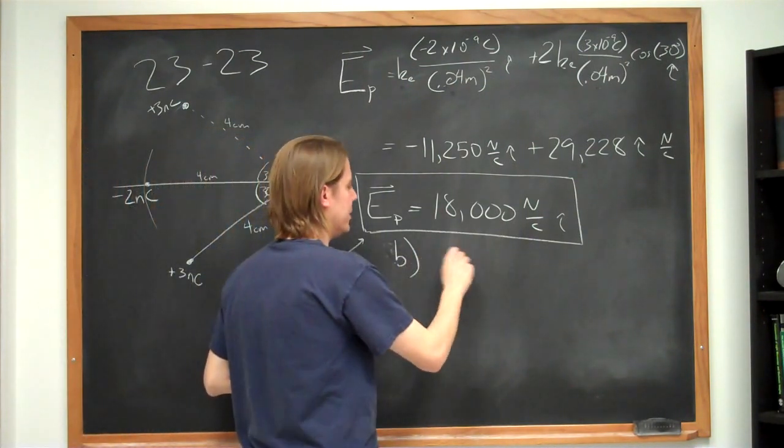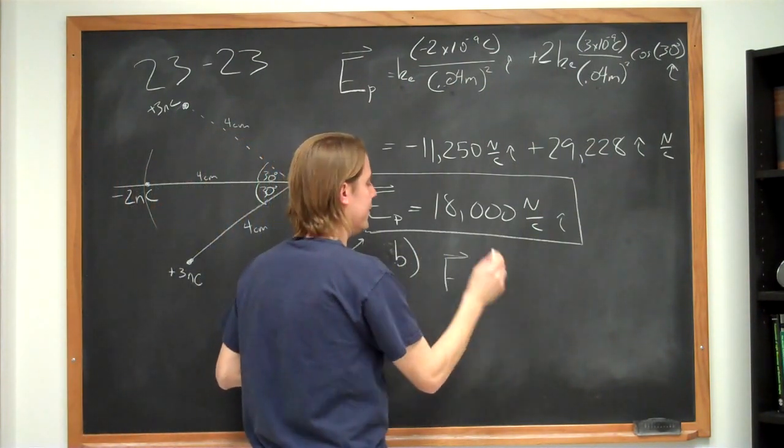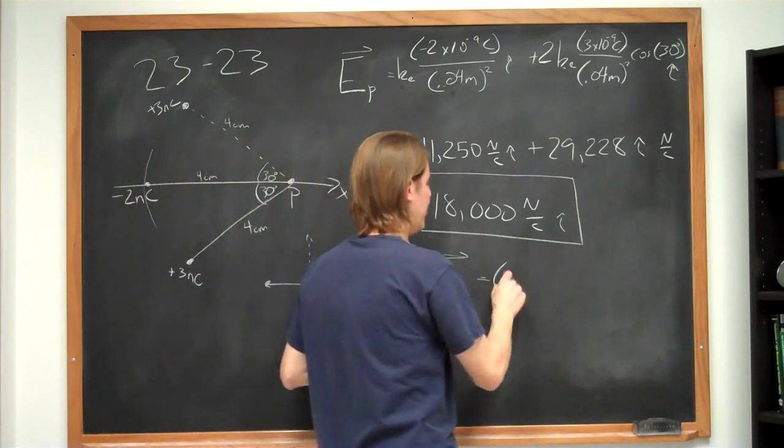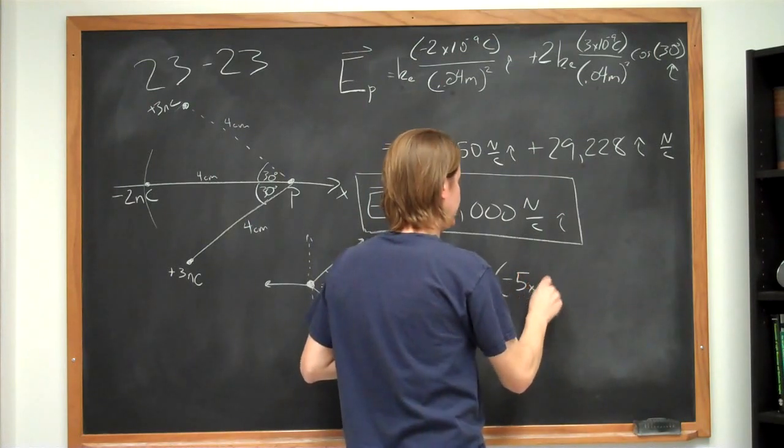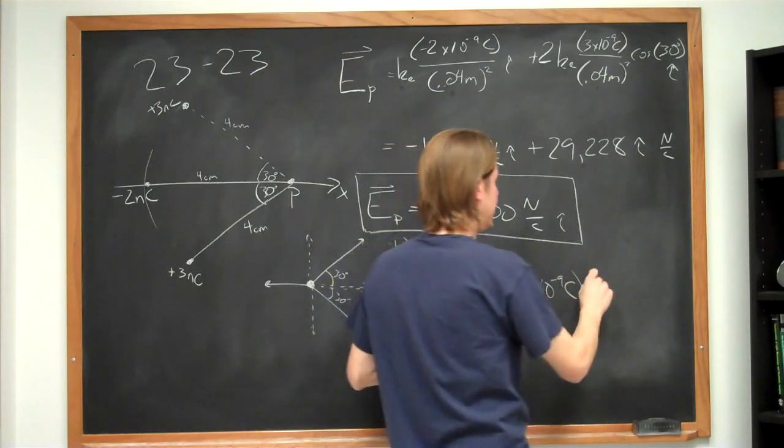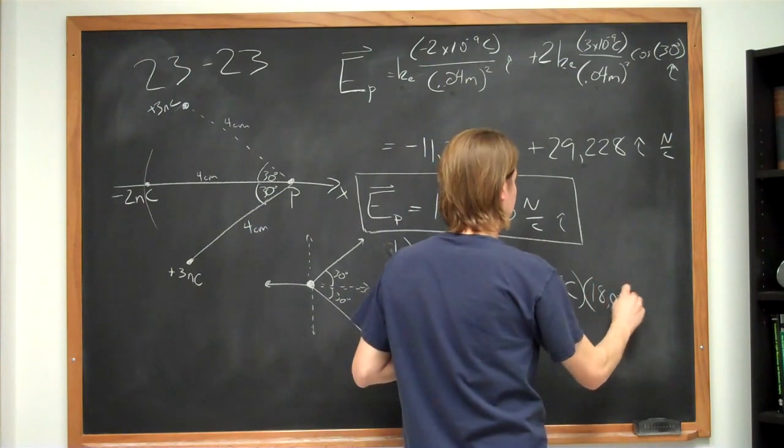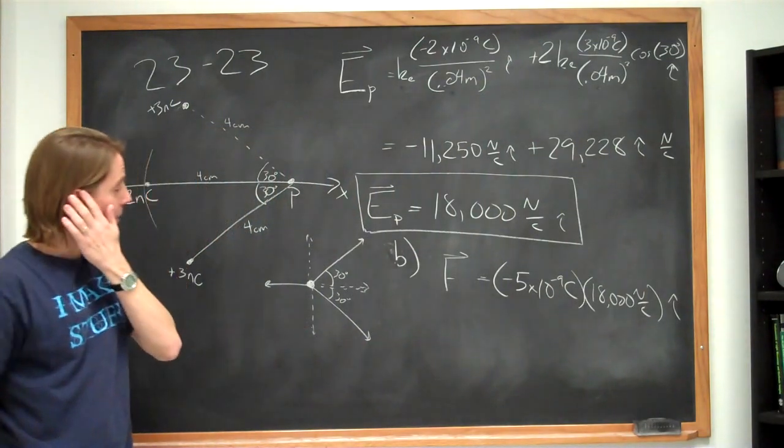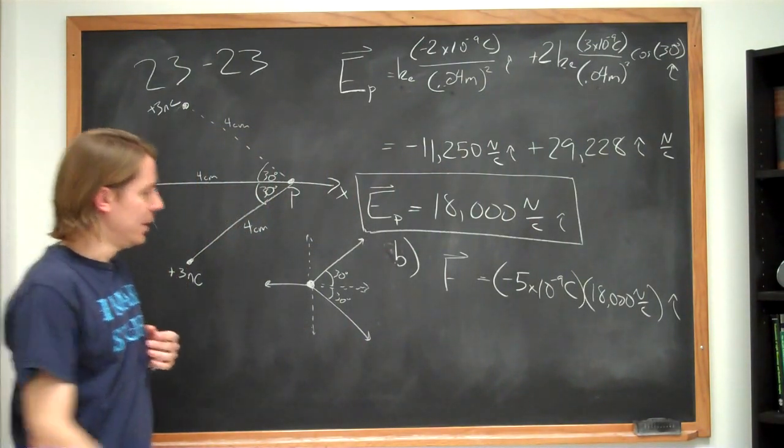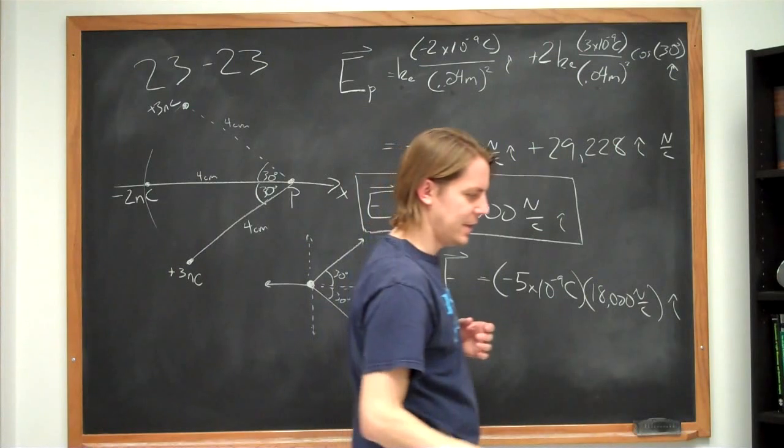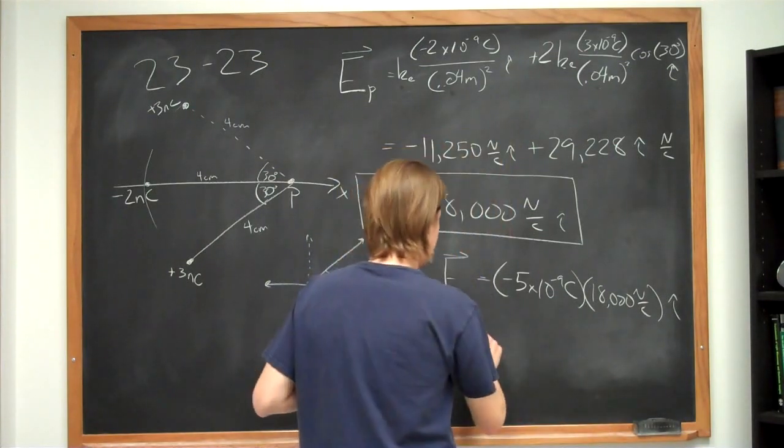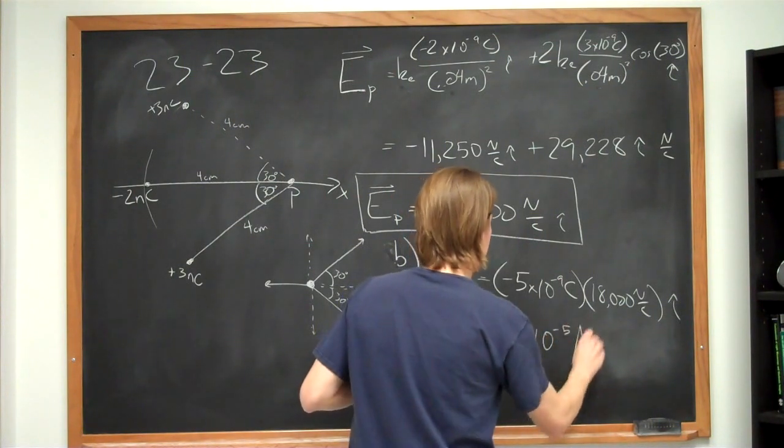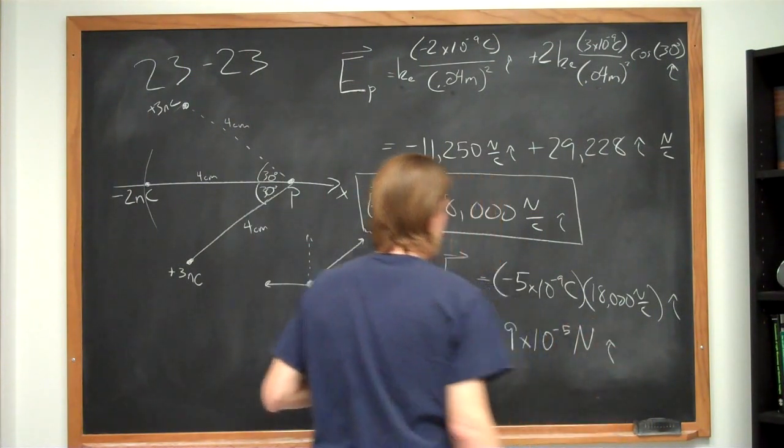And then we just do a direct application of basically the definition of the electric field. We say the force is always the charge times the electric field. So minus 5 times 10 to the minus 9 coulombs times 18,000 newtons per coulomb. It will be in the same direction as the field i-hat direction. So if you just multiply those out, 5 times 18 is usually something kind of like 90. So you get minus 9 times 10 to the minus 5 newtons i-hat direction.